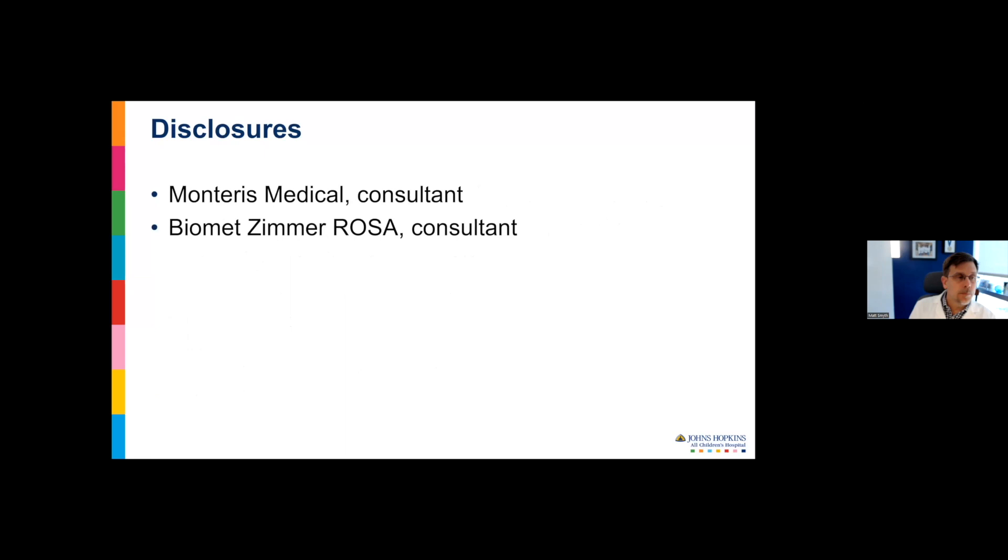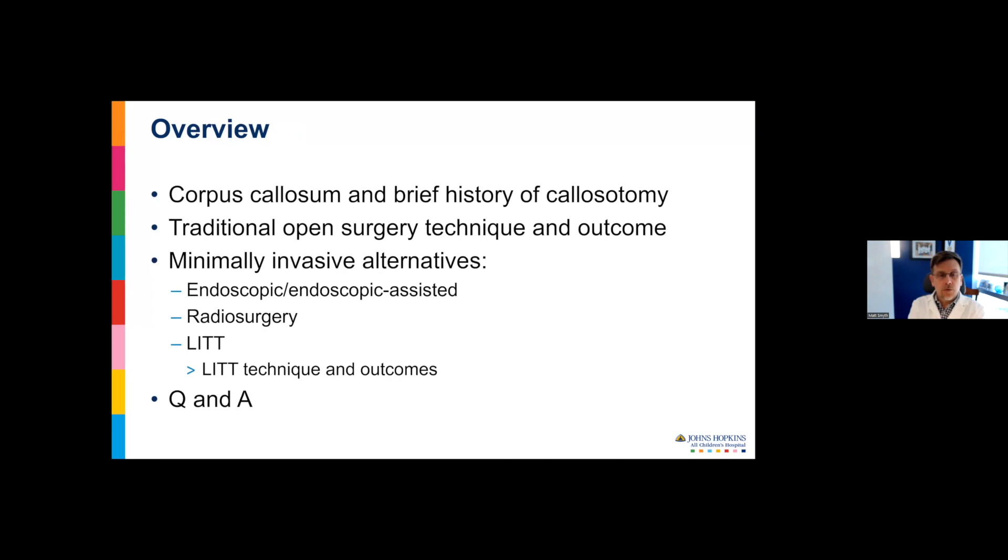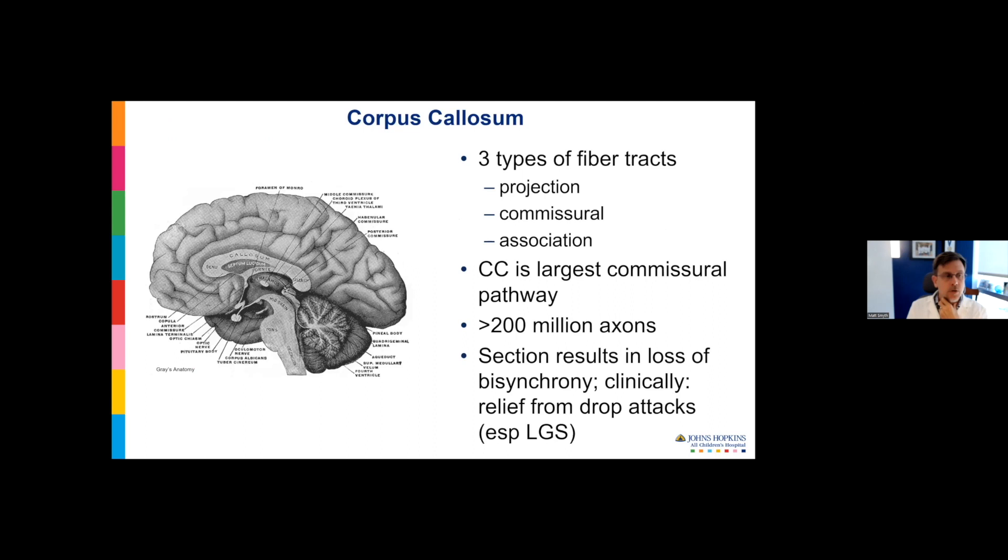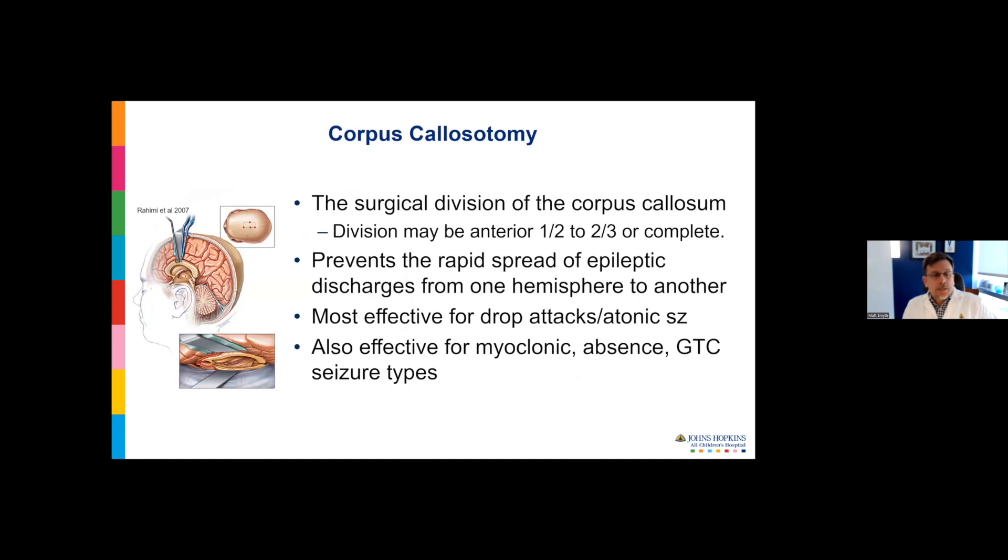I'll talk about the brief history of callosotomy, some historical vignettes of interest, then spend about half the time talking about traditional open surgery, the technique that I like to use and some outcomes, and then the minimally invasive alternatives, primarily laser ablation. The corpus callosum is the largest commissural pathway with about a quarter billion axons. When we section it, we get bisynchrony, which provides relief from drop attacks.